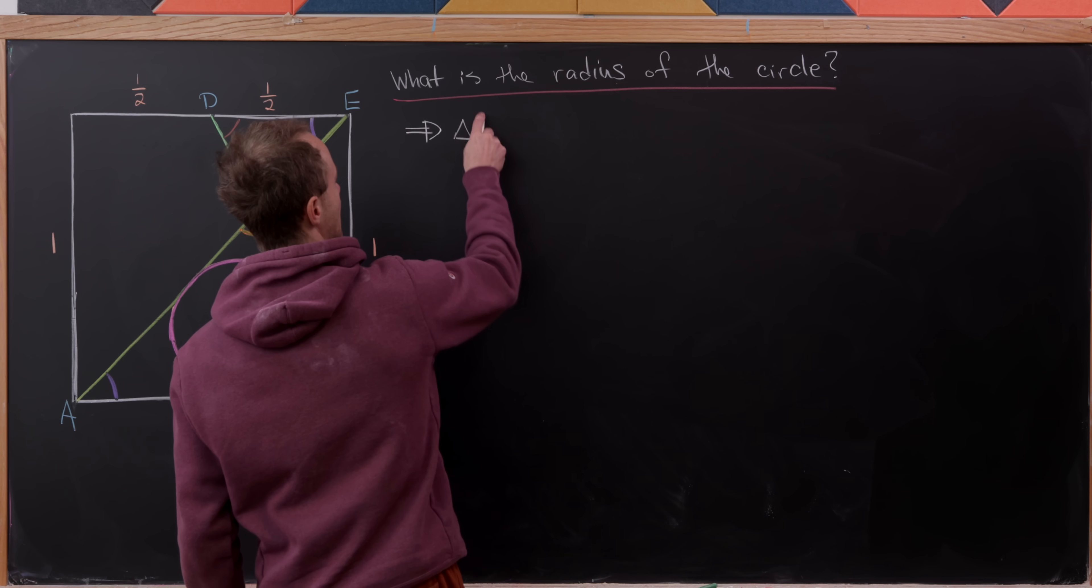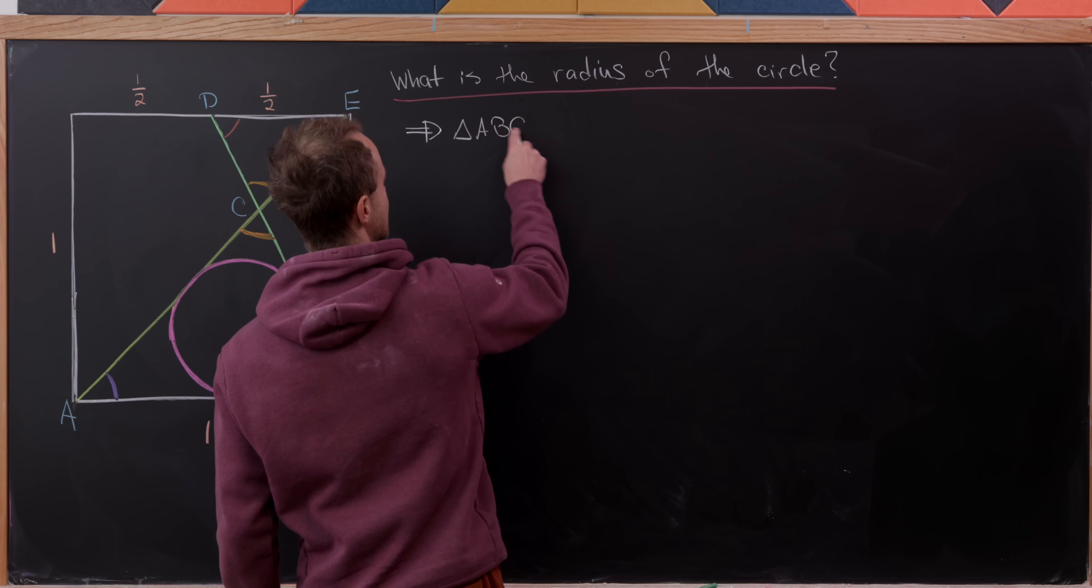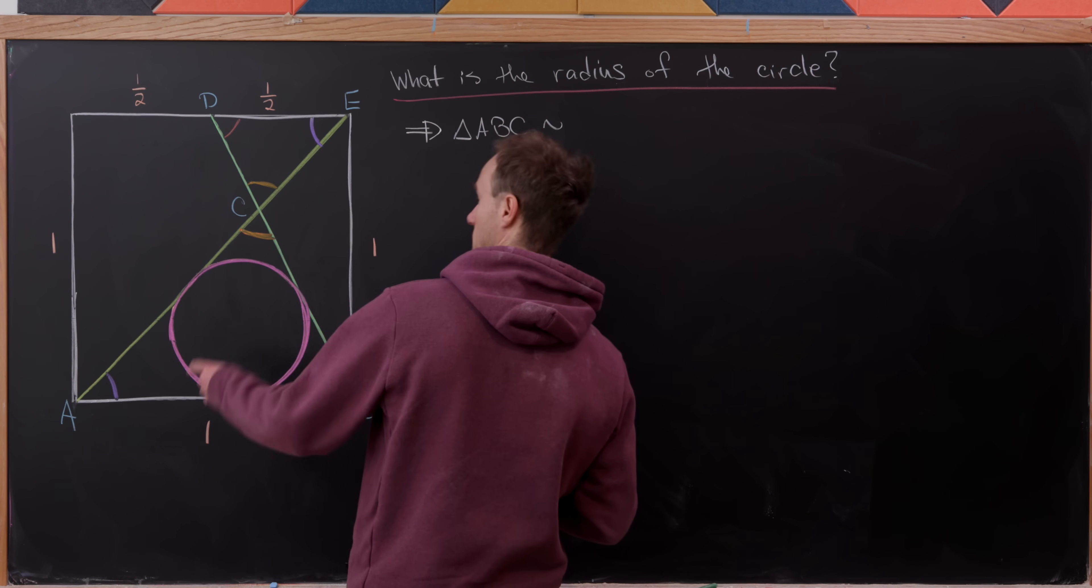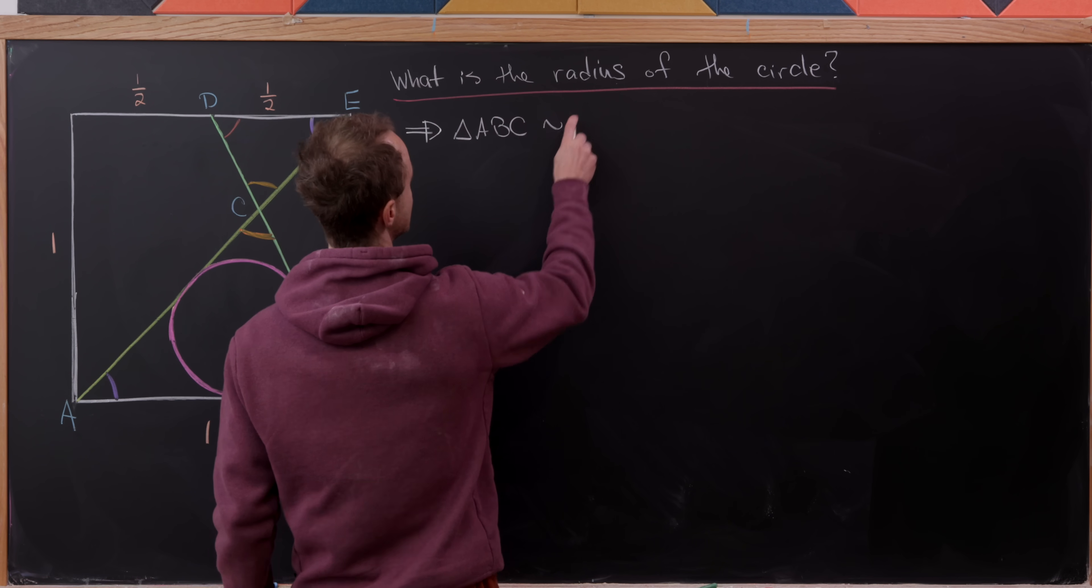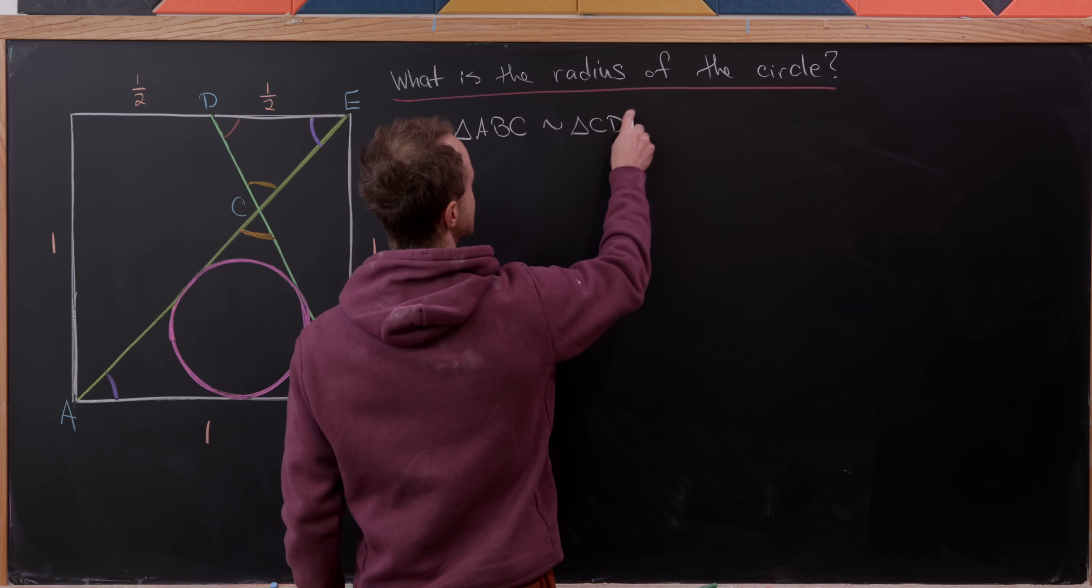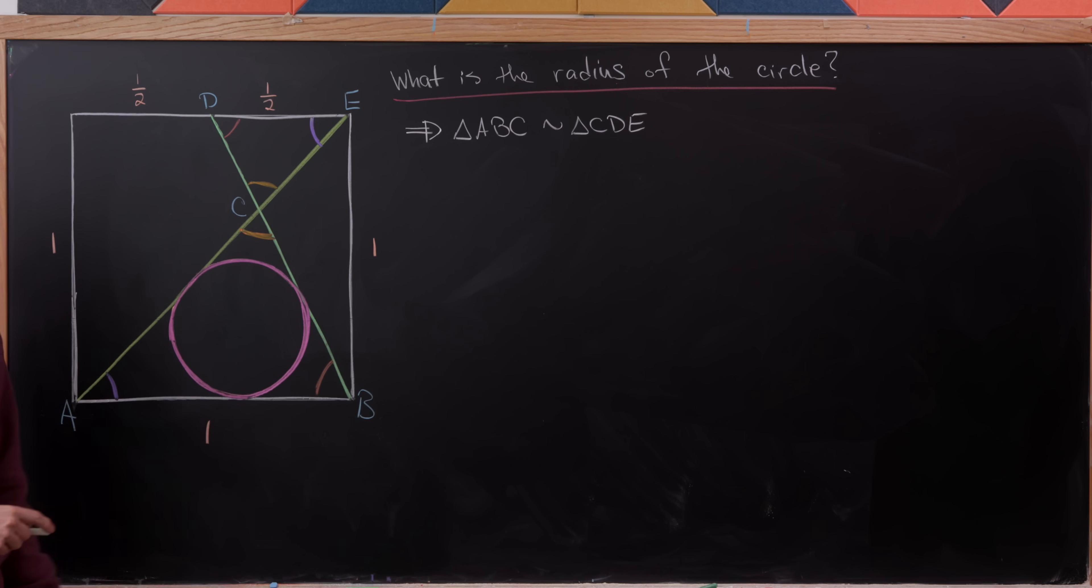So now putting all of this together, we get the similarity of these triangles. That is, we have triangle ABC is similar to triangle CDE.